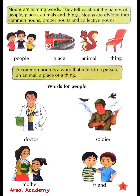Nouns are naming words. They tell us about the names of people, places, animals, and things. Nouns are divided into common nouns, proper nouns, and collective nouns.